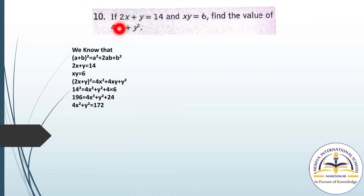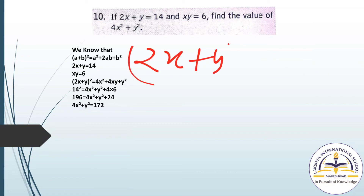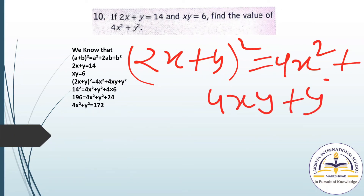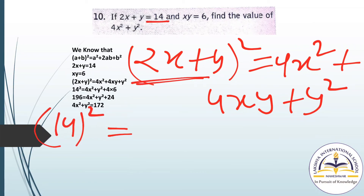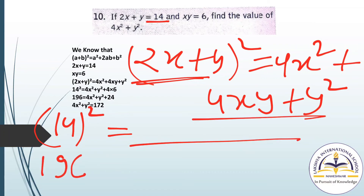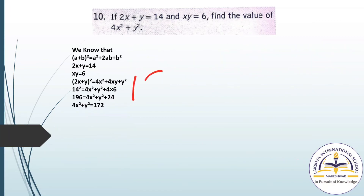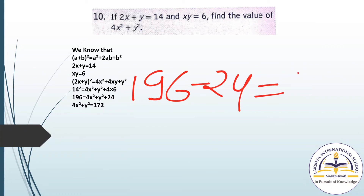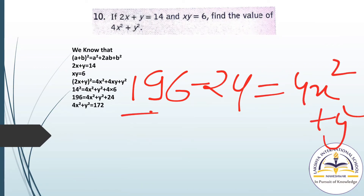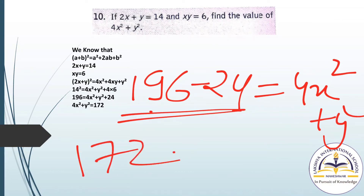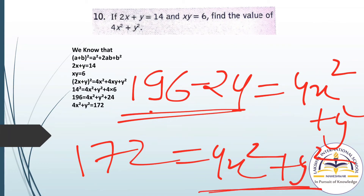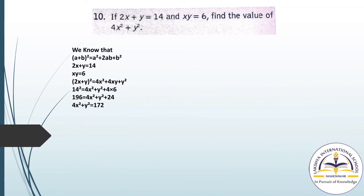Question number 10: if 2X + Y equals 14 and XY equals 6, find 4X square plus Y square. Applying Identity 1: (2X + Y)² equals 4X square plus 4XY plus Y square. Since 2X + Y equals 14, we get 14 square equals 196 equals 4X square plus 4XY plus Y square. So 196 minus 4 times 6 (which is 24) gives 4X square plus Y square equals 172.